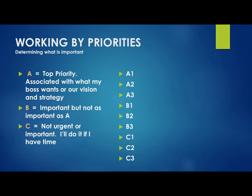Letter A — top priority — is associated with what your boss wants, or your vision and strategy. If you're an employee, whatever your boss wants you to do is the most important thing. But sometimes your boss gives you a pile of things and you need to go back and say, 'Boss, you've asked me to do these five things and I don't have enough time — can you tell me which two are most important?' Ask your boss to help you prioritize.